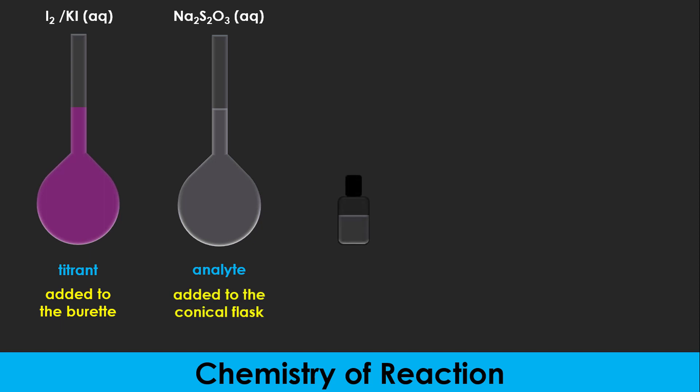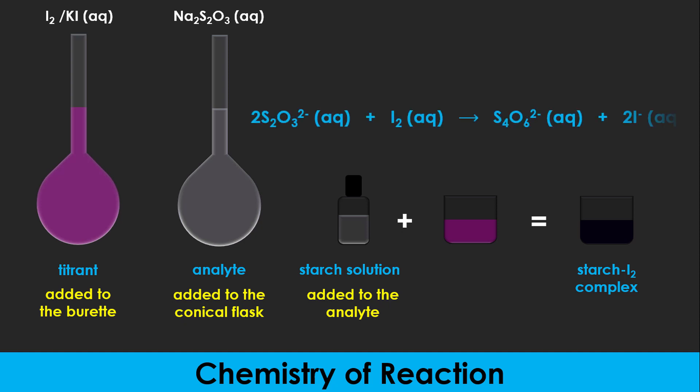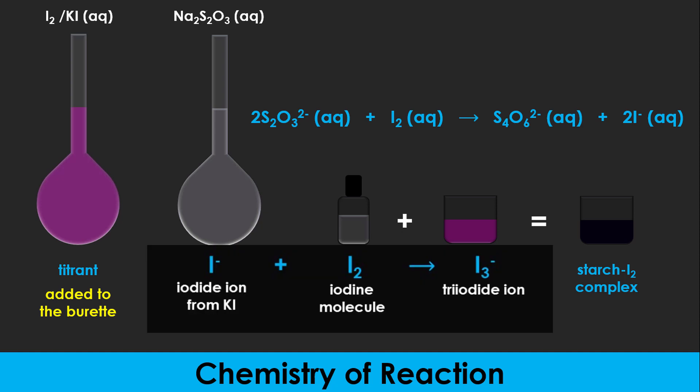Being an iodimetric titration, starch solution is added as an indicator to determine the endpoint of the titration. The starch indicator, which is added to the thiosulfate solution before the titration starts, will react with the iodine molecule to form a starch iodide complex which has a blue-black color. This will only occur at the end of the reaction when all the thiosulfate ions in the analyte have been used up to reduce the iodine molecules to iodide ions. According to the equation, iodide ions cannot form a complex with starch, therefore the solution will remain colorless.